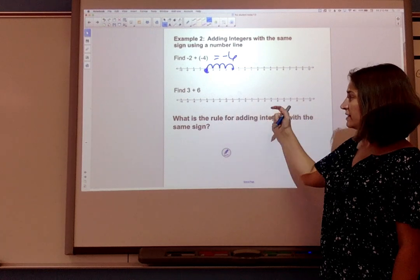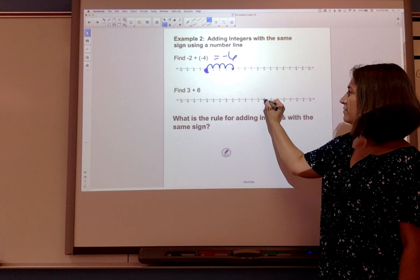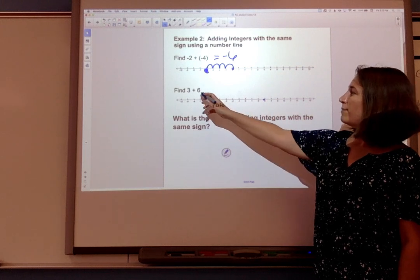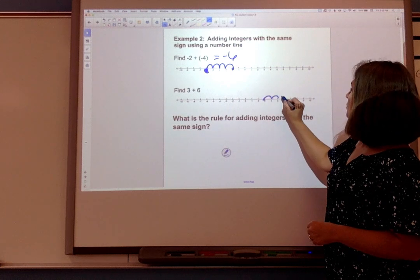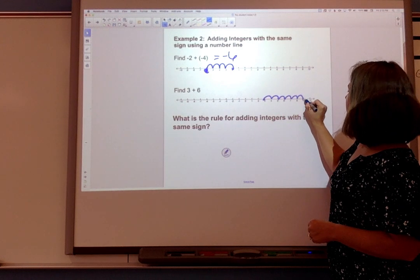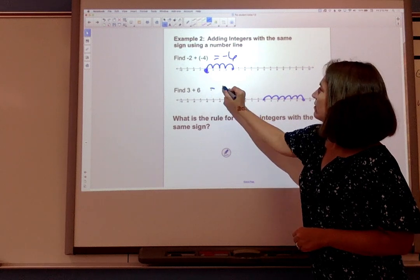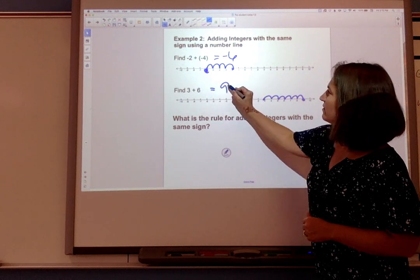Here's 2 positive integers. I'll start at positive 3 which is to the right of zero. When I'm adding another positive I'm moving further to the right. 1, 2, 3, 4, 5, 6. I'm gonna end up right here at positive 9.